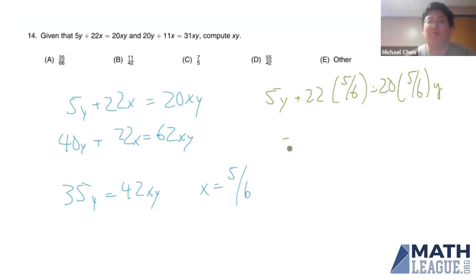And if we simplify this, we get 22 times 5 sixth is equal to 35 over 3 times y. Multiplying both sides by 3 over 35, we can cancel some stuff out. And we get y equals 11 over 7.